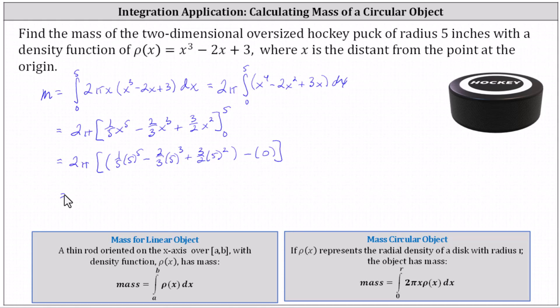Simplifying, the exact mass is 3,475/3 π, which is approximately 3,639.0115.